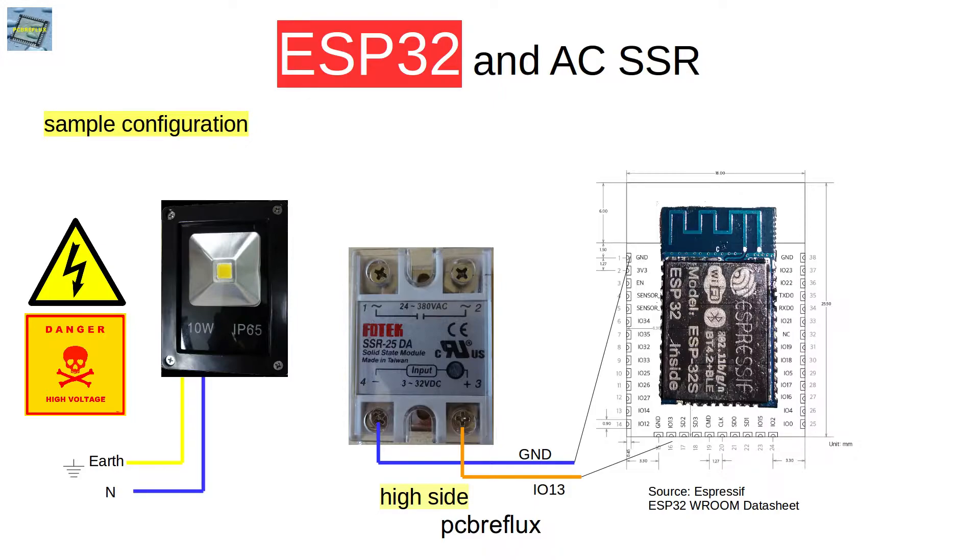Then I connect the neutral wire. And the live wire from the LED I connect to the solid state relay. And then from the solid state relay to the live wire to the plug. This is also the wiring if we use the low side switch for the ESP32 GPIO ports.